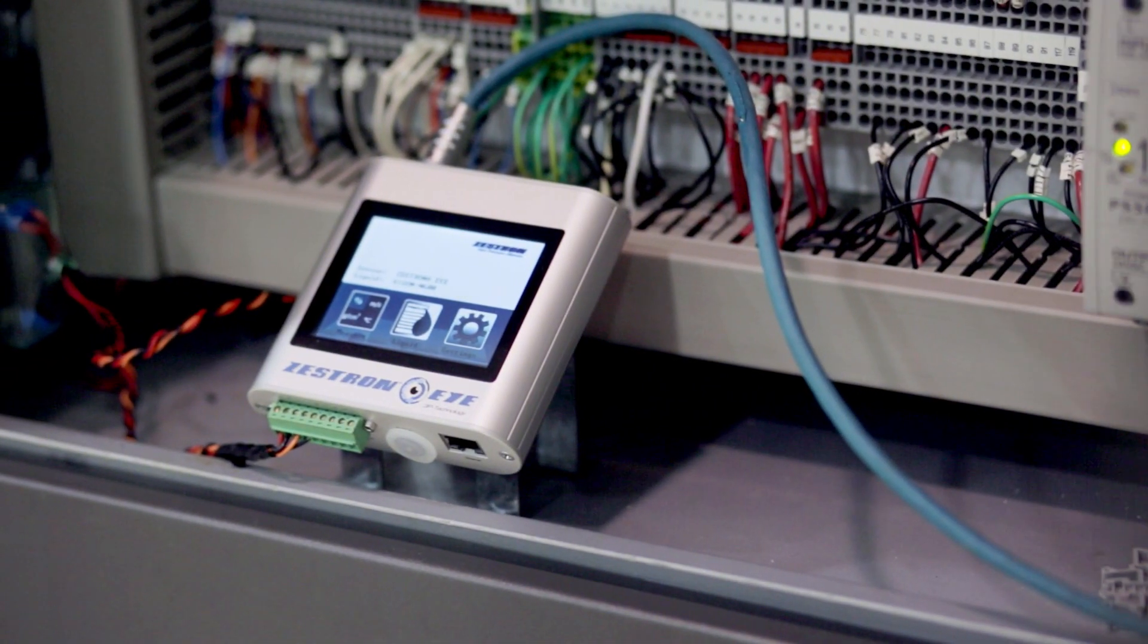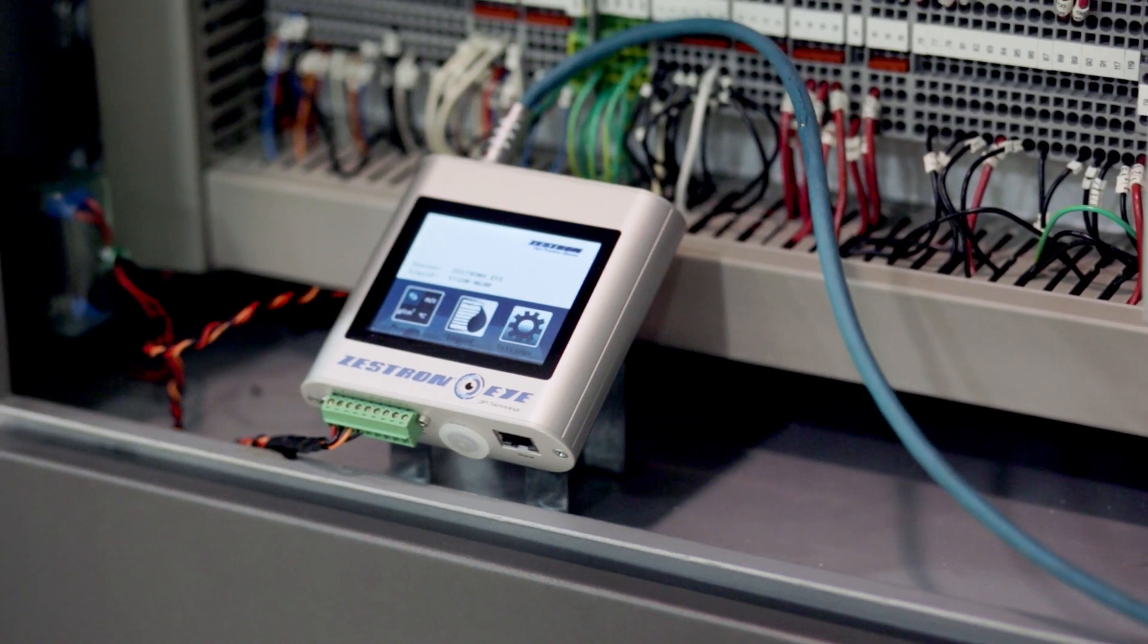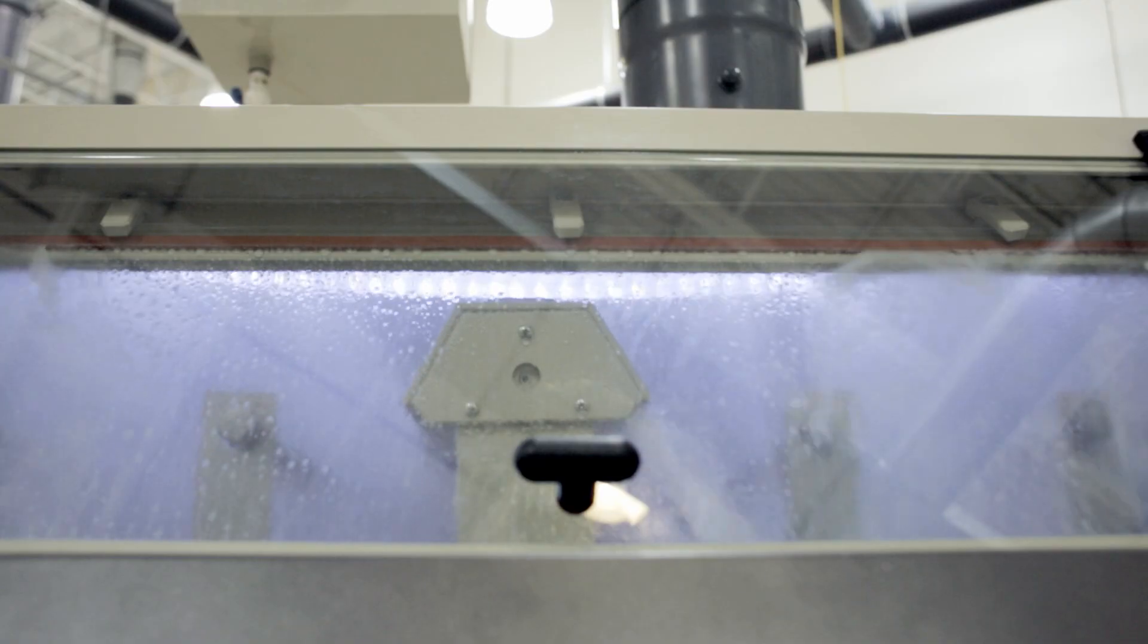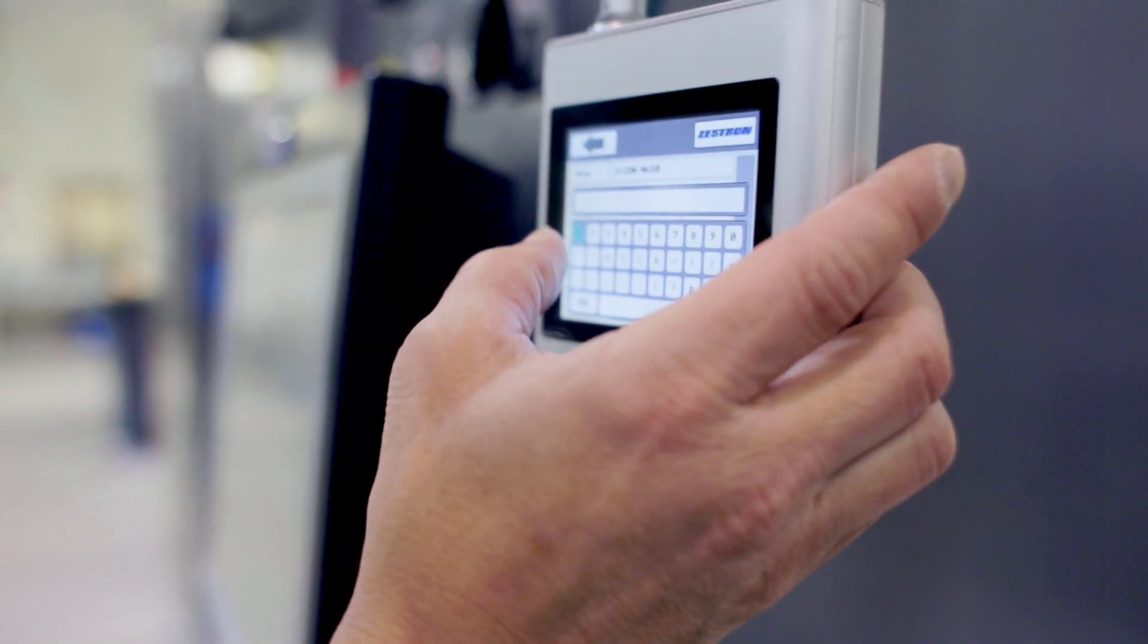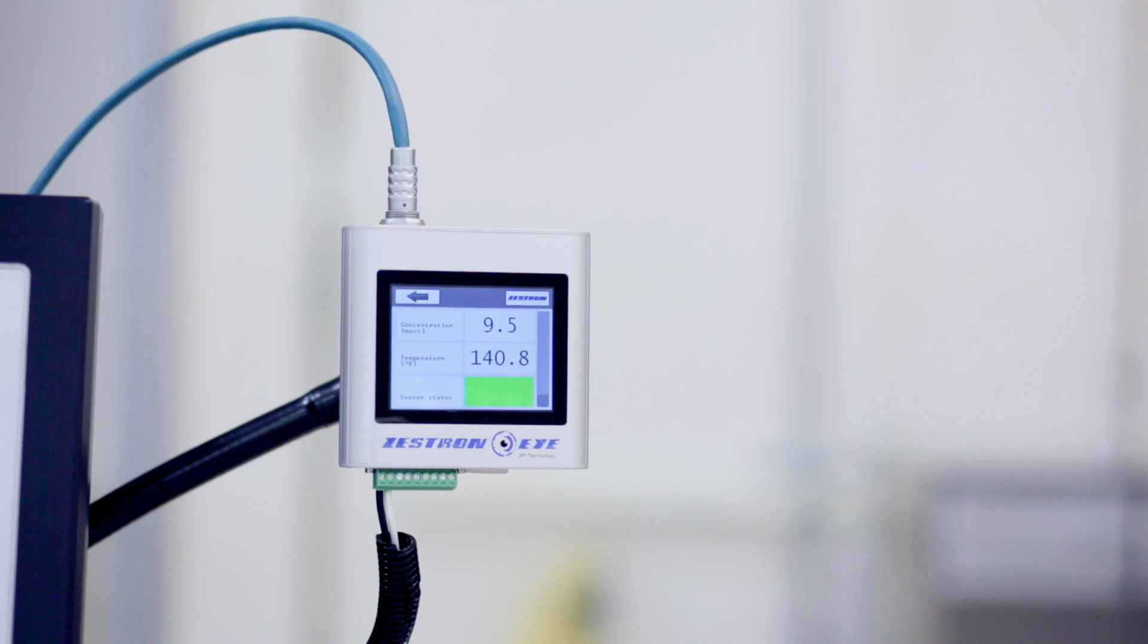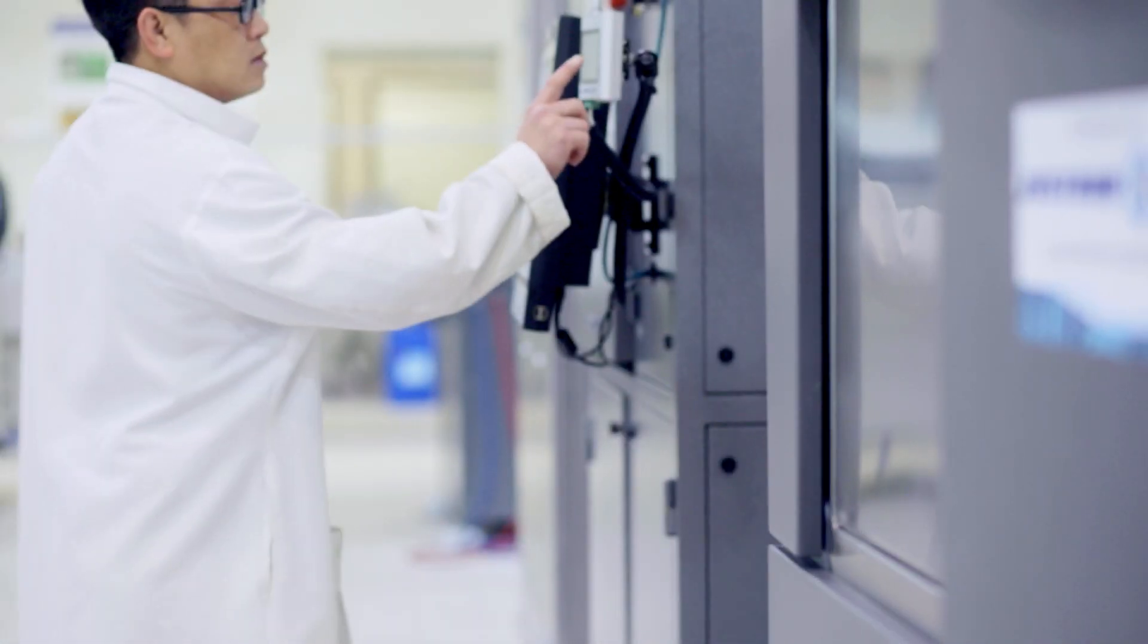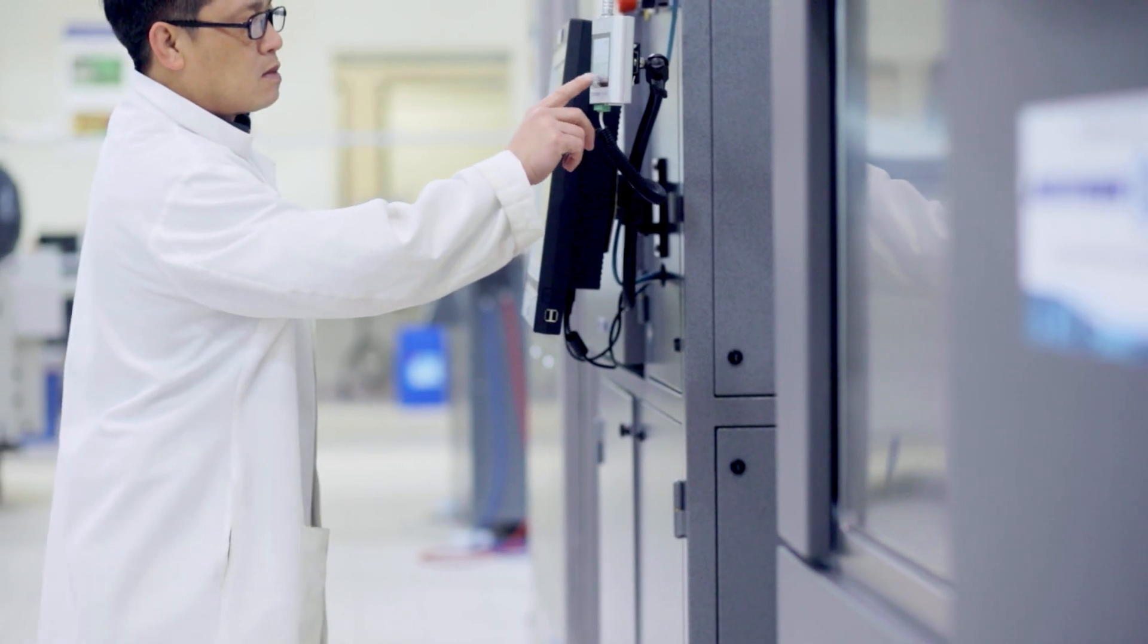The Zestron i is a digital monitoring system that enables precise measurement and control of the cleaning bath concentration in electronics cleaning processes. Real-time automated readings allow quick responses to changes in wash bath concentration, reducing the operator's workload and improving process throughput.